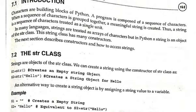A string is nothing but a group of characters. In many languages, strings are treated as an array of characters. In Python, a string is an object of the str class.